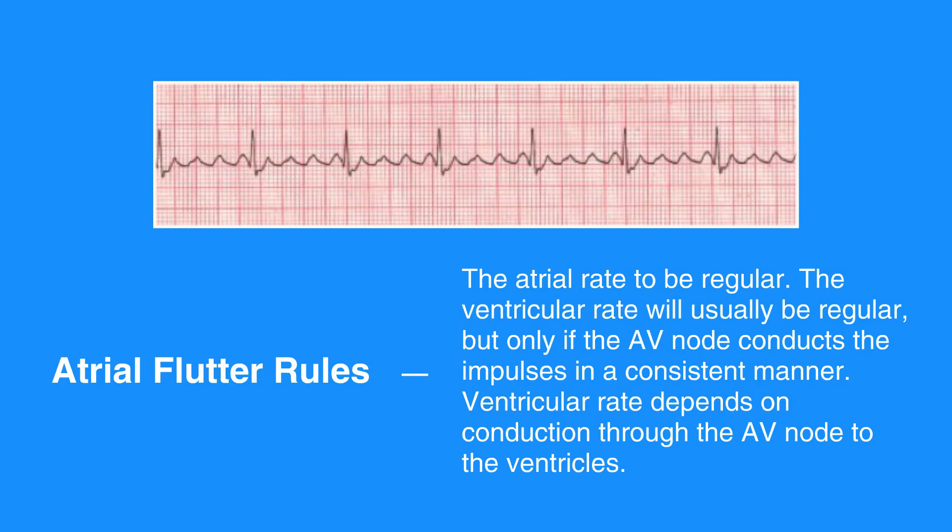The atrial rate is normally between 250 to 350. Ventricular rate depends on conduction through the AV node to the ventricles. The P waves will be well defined and have a sawtooth pattern to them. Due to the unusual configuration of P waves, the PR interval is not measured with atrial flutter. The QRS complex measures less than 0.12 seconds.